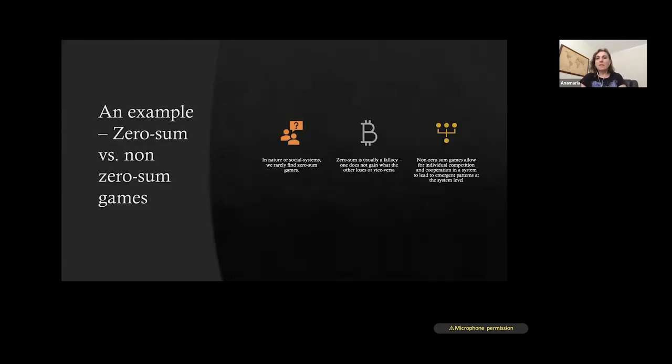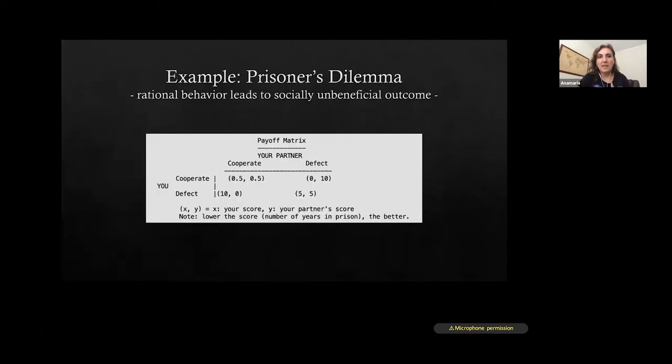Let's take another example about zero sums and non-zero sums games. In nature or in social systems, we rarely find zero sums games, because zero sum is usually a fallacy. One does not gain what the other loses or vice versa. So we actually never find this in nature. But non-zero sum gains allow for individual competition and cooperation within the system to lead to some emergent patterns and properties at the system's level.